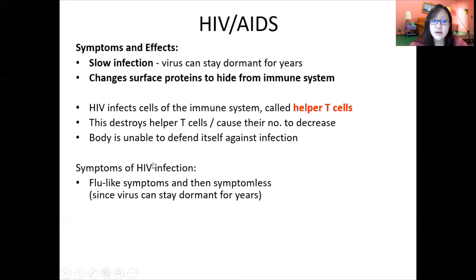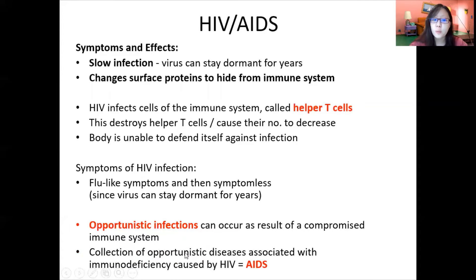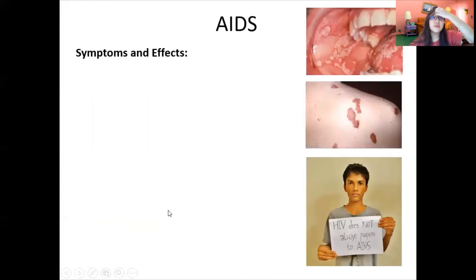At first, an HIV infection could be symptomless for many years or produce only minor flu-like symptoms. But if immune cells continue to decrease in number, opportunistic infections can occur as a result of the compromised immune system. A collection of these opportunistic diseases associated with HIV is called AIDS.